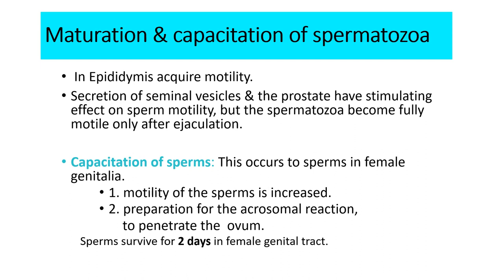Capacitation of sperms: multiple changes taking place to activate spermatozoa when they enter the female genital tract are collectively known as capacitation. It takes 1–10 hours for these changes to occur. After capacitation, sperm motility increases and the sperm prepares for the acrosomal reaction to penetrate the ovum. Sperms survive for 2 days in the female genital tract.